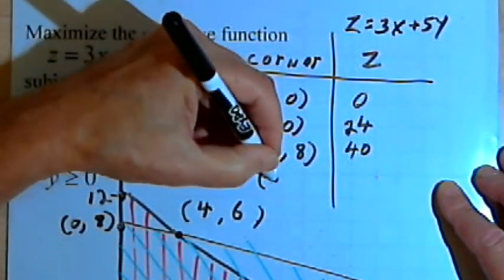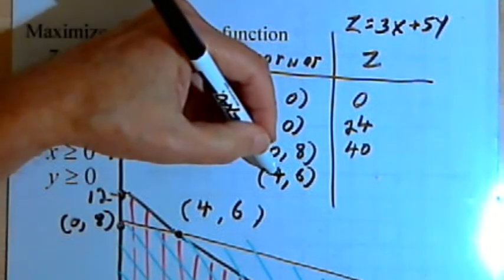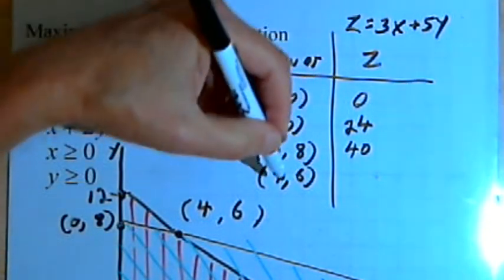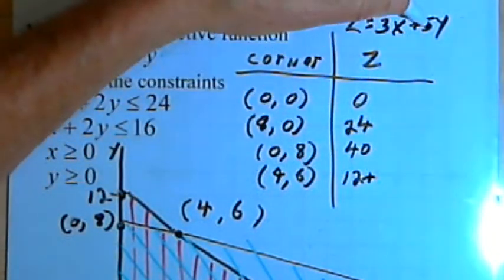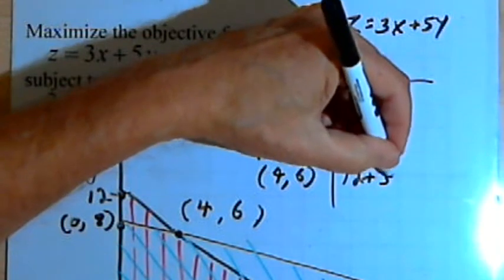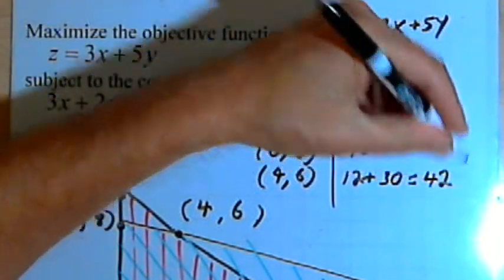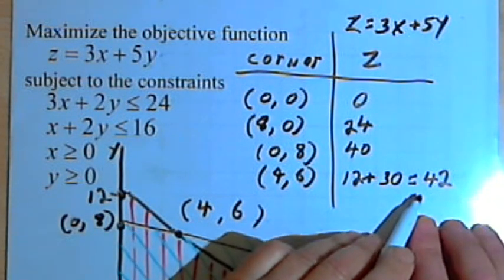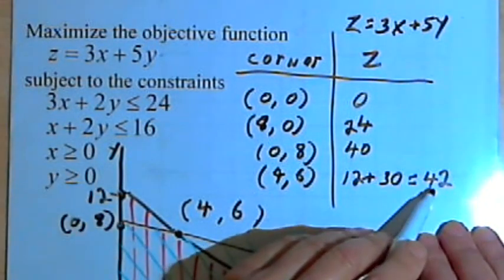And now we'll do the last point, 4, 6. So x is 4, y is 6. 3 times 4 would be 12, plus 5 times 6 would be 30, which equals 42. So the maximum value we can have for z, given these constraints, is 42.